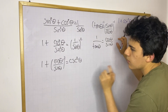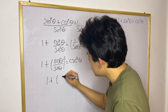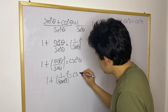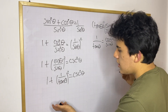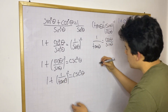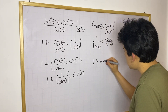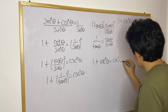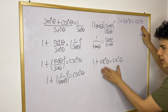So now we're going to plug that value in. We get one plus one over tangent theta, all squared, equal to cosecant squared theta. And since one over tangent is cotangent, we get one plus cotangent squared theta equals cosecant squared theta. And there's the equation we were trying to derive.